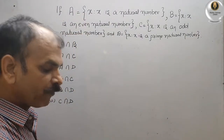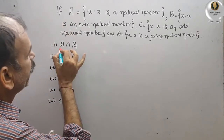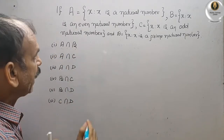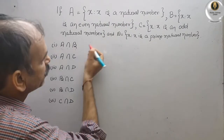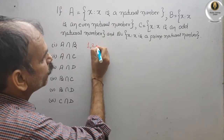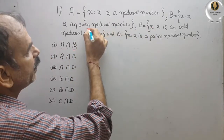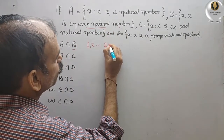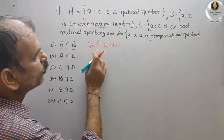Now we will find out one by one what they have given. Here they have given A intersect B. A is natural numbers, starting with 1, 2 and so on. And B is even natural numbers, that means 2, 4, 6 and so on. And we have to intersect.